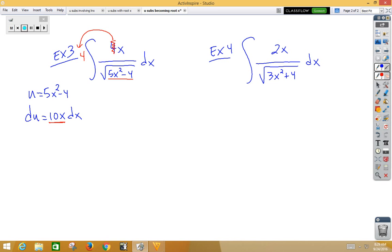Now when I want to put the 10 on the inside, I'm going to divide by 10 on the outside. Reducing 4 tenths, I get 2 fifths integral 1 over root u du.